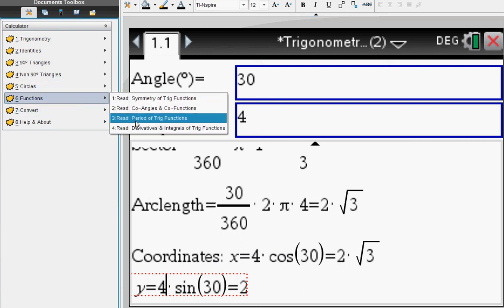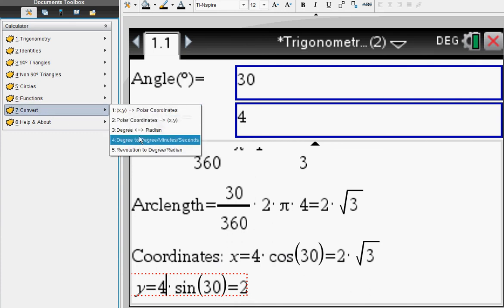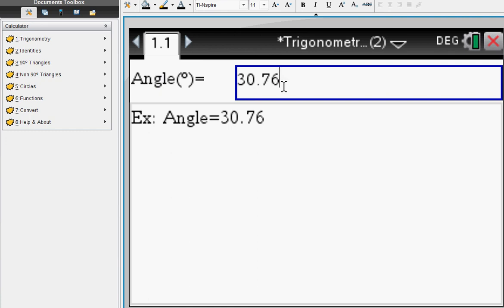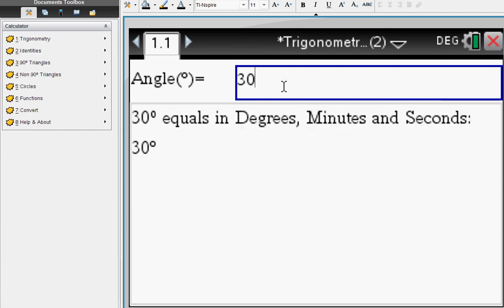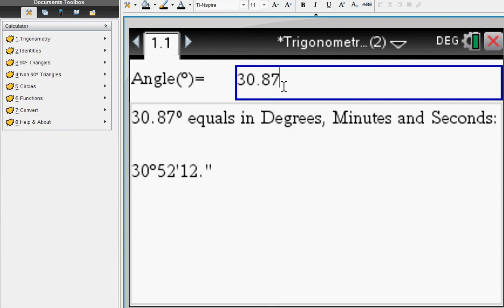Here you can read about trig functions. Lastly, let's convert from degree to radian. Say you enter 30 degrees: 0.87 radians. This is what you're going to get in degrees and minutes as well.